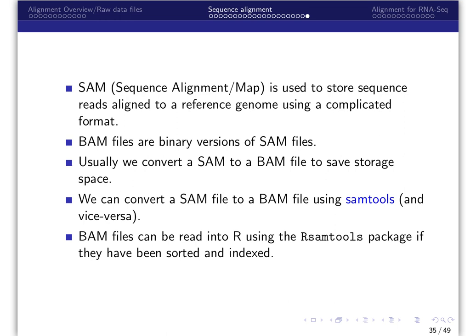Therefore, usually we convert a SAM to a BAM file to save storage space. We can convert a SAM file to a BAM file using a program called SAM tools. SAM tools provide software to interconvert between data formats. BAM files can be read into R using the R SAM tools package if they have been sorted and indexed.